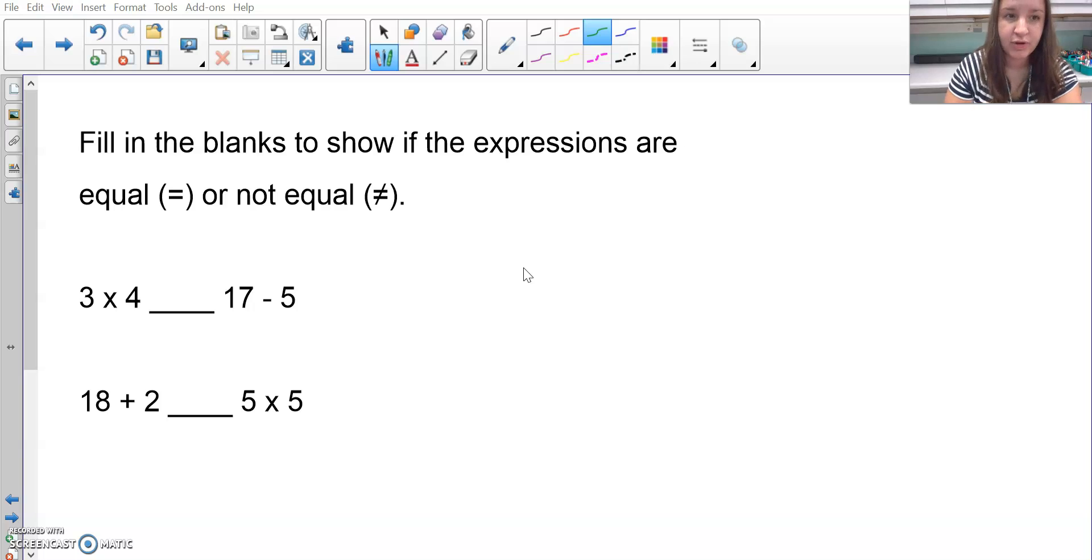Now we're going to fill in the blanks to show if the expressions are equal or not equal. On this side, I have three times four, and on this side, I have 17 minus five. I'm going to solve these and decide if these expressions are equal or not equal by writing the symbols in the blank. Three times four is 12, and 17 minus five is 12. So these two expressions are equal to one another.